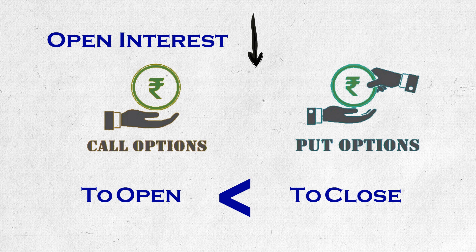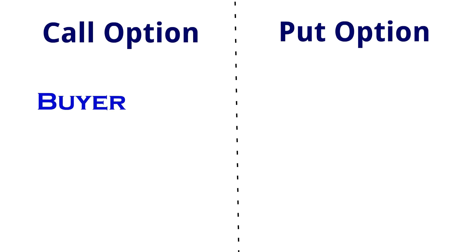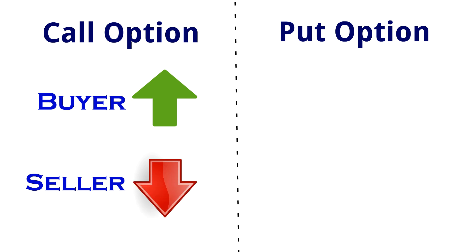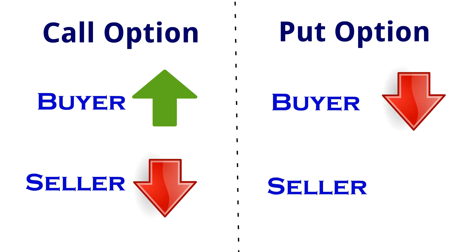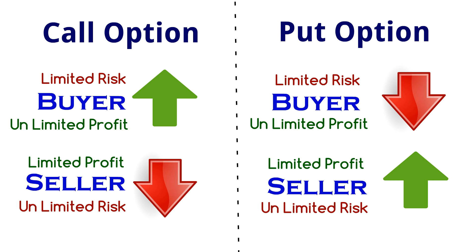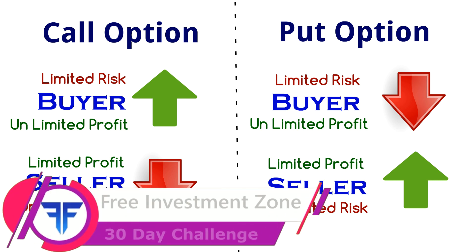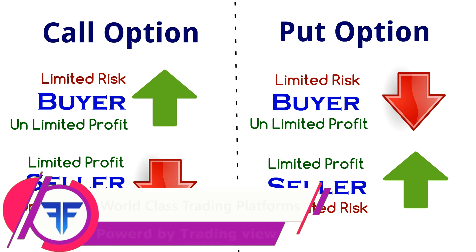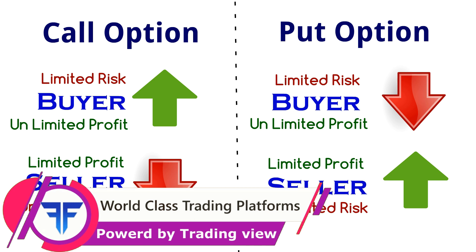Let us now see how this open interest is of use to us. But before that, let's warm up with required basics. One becomes a call option buyer as he is bullish on that underlying asset, and one becomes a call option seller due to a bearish view on that same script. Similarly, a put option buyer is on a bearish view, and the put option seller is on a bullish view. In any option, the buyer has limited risk but unlimited profit, and the seller has limited profit to the premium but unlimited risk. A buyer profits only when price moves in his favorable direction. But for the seller, even if the price stays there itself, he profits — due to time decay.